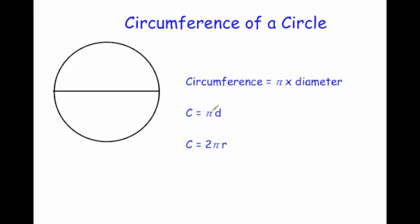It can also be written as c equals 2 pi r. That just means that if you're given the radius, you double it and then multiply by pi to get the circumference. So all three of these formulae might be used by your maths teacher.